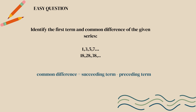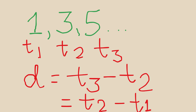Here is a question: please identify the first term and common difference of the given series. The common difference is calculated as the succeeding term minus the preceding term. Looking at the sequence, the succeeding term is 3 and the preceding term is 1. So 3 minus 1 gives a common difference of 2.